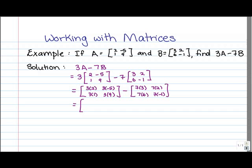Next, let's go ahead and simplify in each matrix before we actually do the subtraction. So 3 times 2 is 6, 3 times negative 5 is negative 15, and so on. And similarly, in the matrix 7B, 3 times 7 is 21, 2 times 7 is 14, and so on.